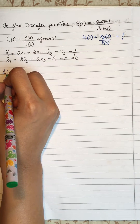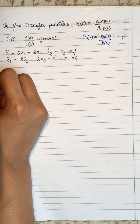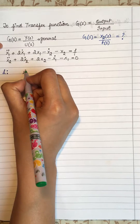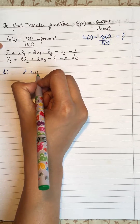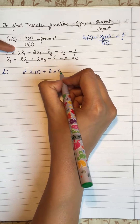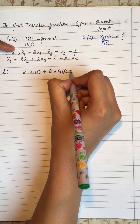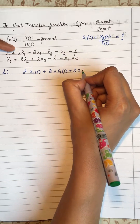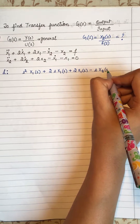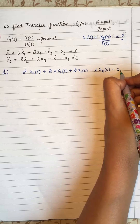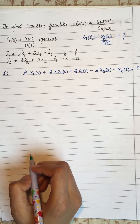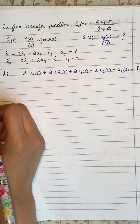So our first equation will become: x1 double dot means s² X1(s), plus 2s X1(s), plus 2 X1(s), minus s X2(s), minus X2(s), equals F(s). So this first equation is now changed into Laplace transformation.